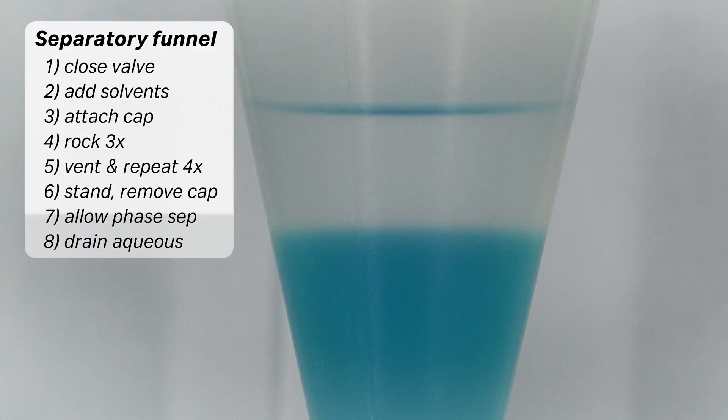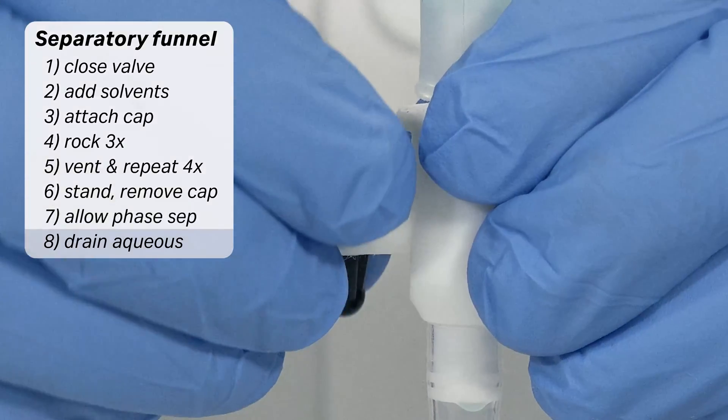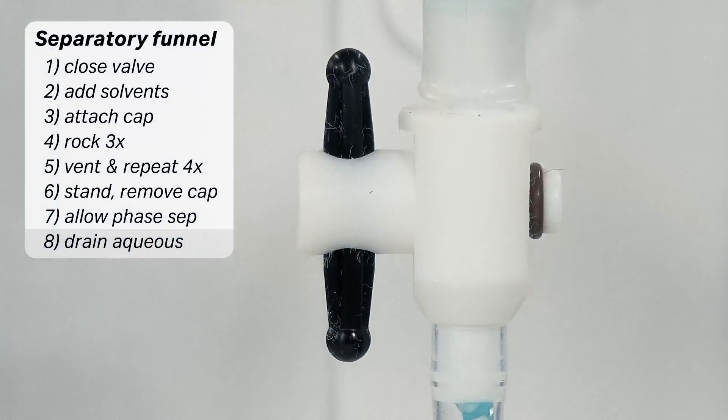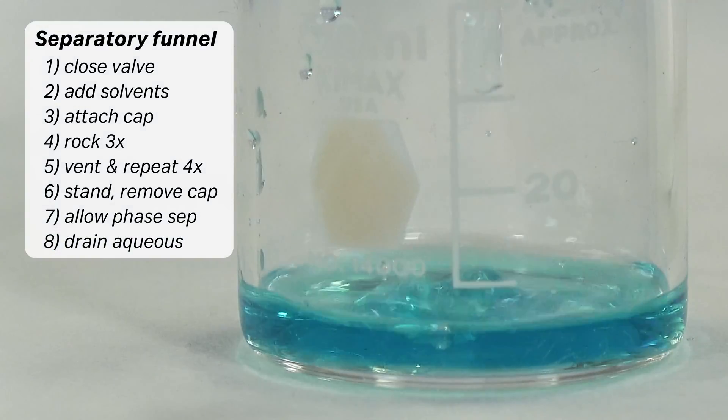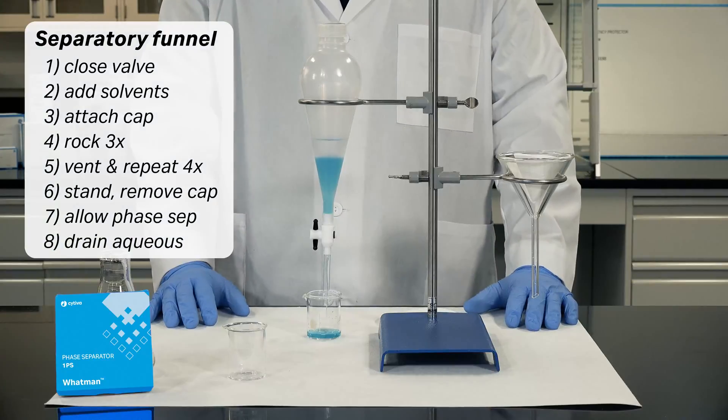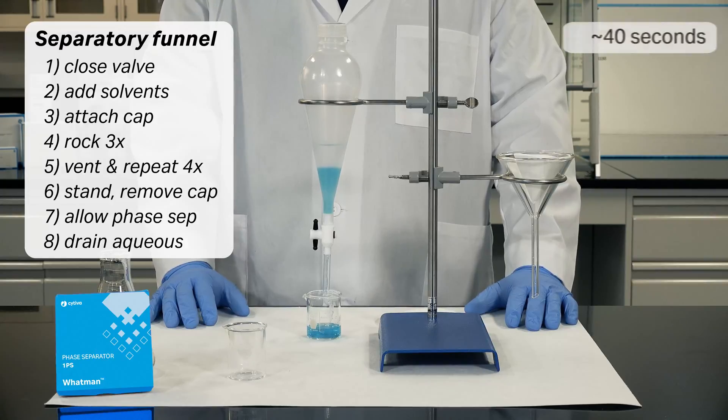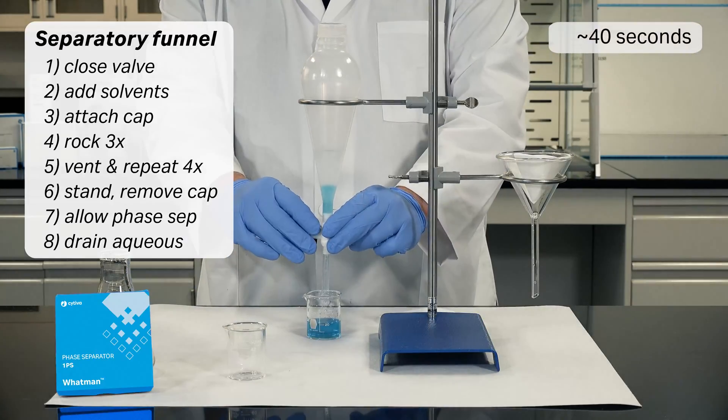Allow the phases to separate into two distinct layers. Open the separatory funnel valve and drain the aqueous phase into a beaker. Drain a small amount of the organic to prevent water contamination.